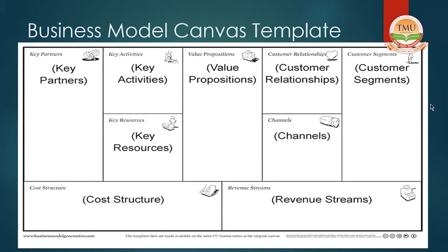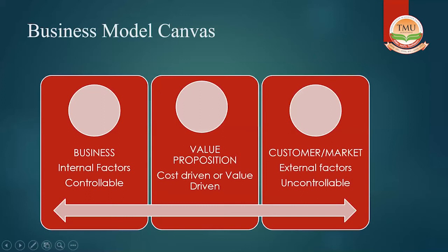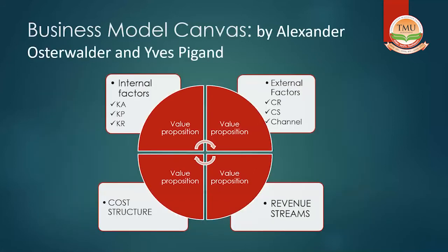This is just the depiction: we have a value proposition that can be cost-driven or value-driven. On the left side, we have internal factors — they are internal to the business and controllable. On the right side of the value proposition, we have customers — market and external factors which are uncontrollable. This is how everything goes around the value proposition, categorized into internal and external factors.